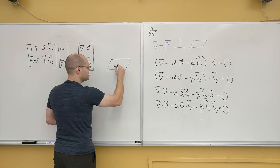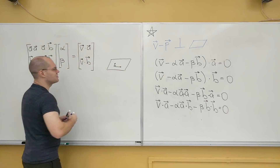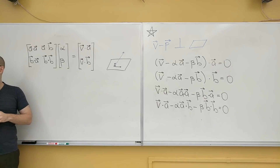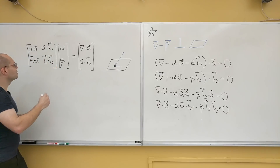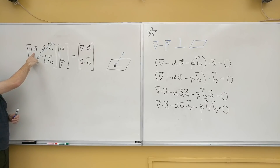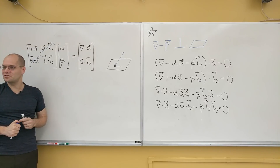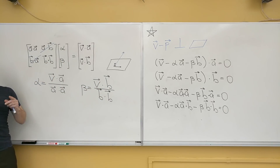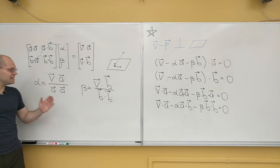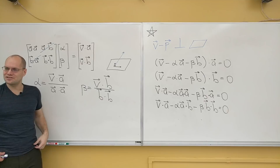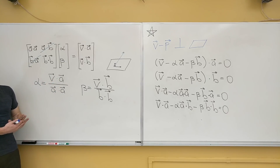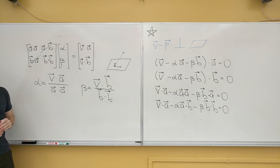The parallel with decomposition is even better in the special case where a and b are orthogonal. When a and b are orthogonal, the off-diagonal dot products a·b vanish, leaving a diagonal matrix with |a|² and |b|² on the diagonal. We can solve immediately: α = (v · a) / (a · a) and β = (v · b) / (b · b) — the exact same expression as in the decomposition case. You dot the vector with the corresponding element of the set and divide by that element dotted with itself.